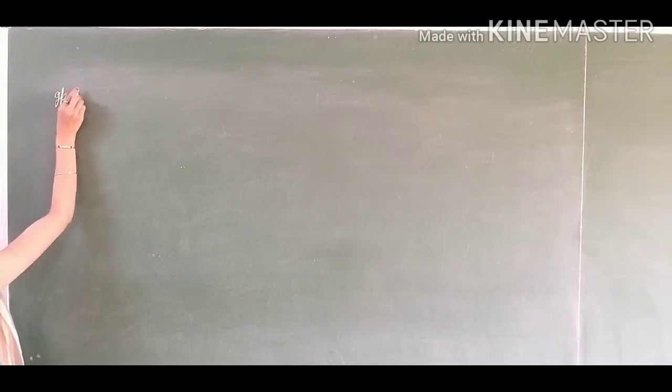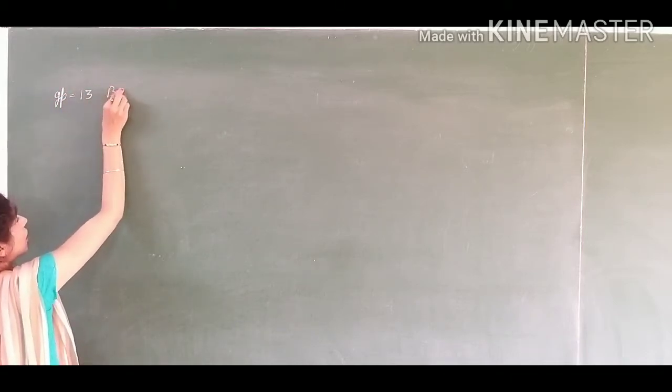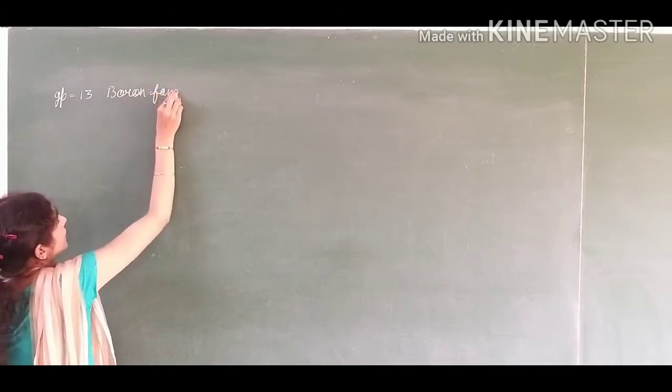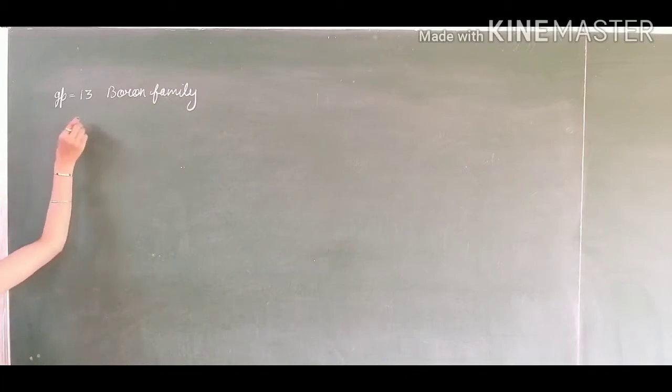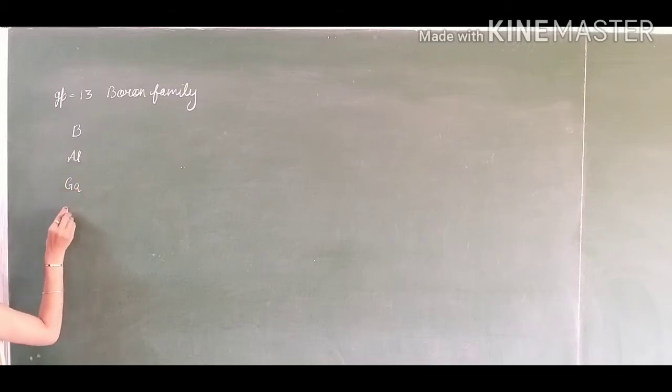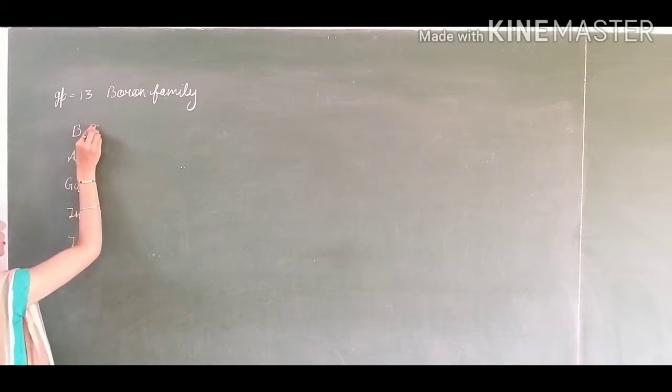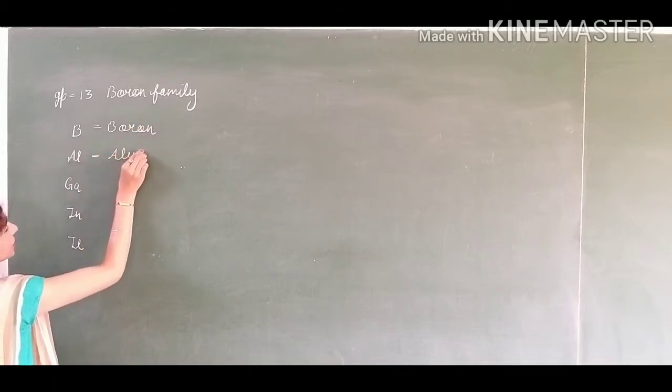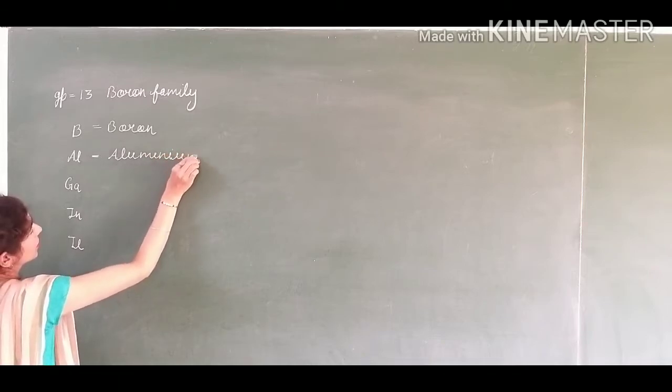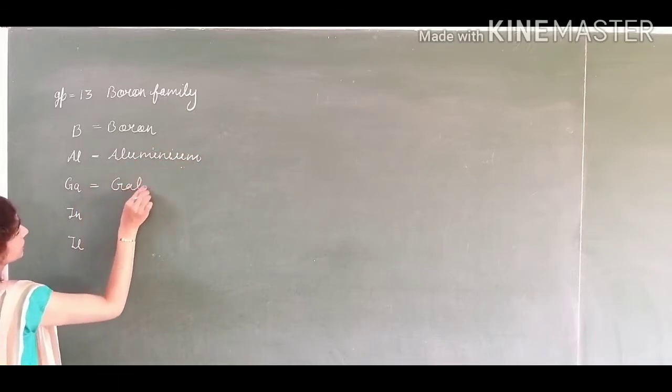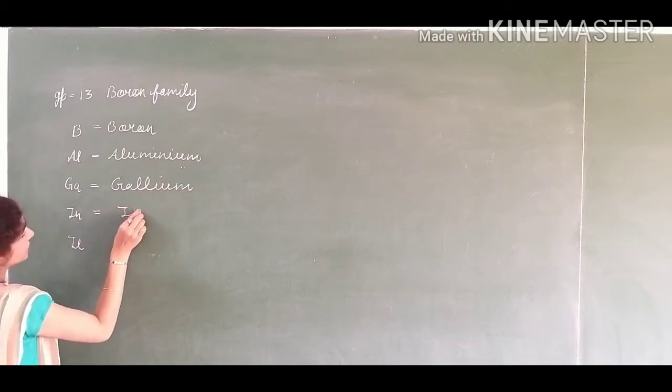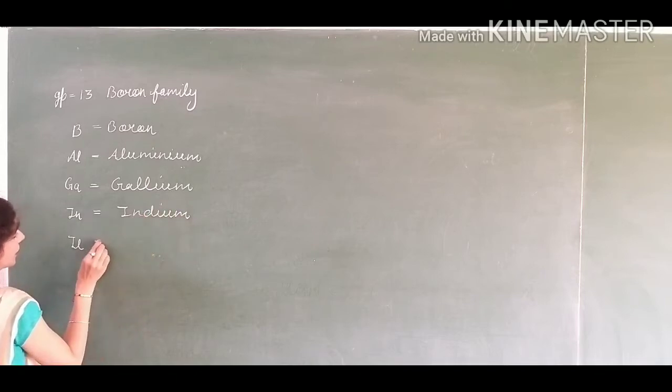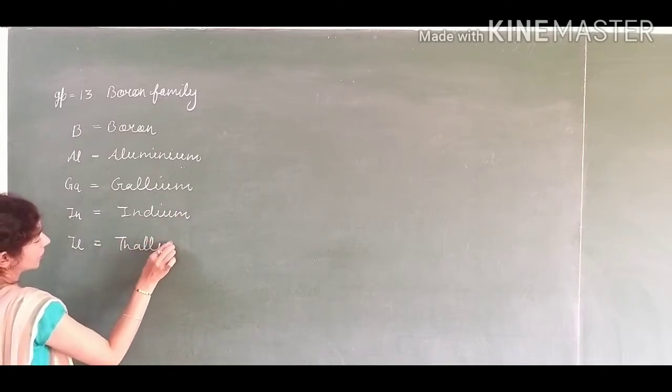Group 13. The name for group 13 we call this is boron family because it starts from boron. So you have to write here boron, aluminium, gallium, indium and thallium. These are the element symbols. So their names I am writing: boron, next aluminium, next gallium, next indium, and next thallium.